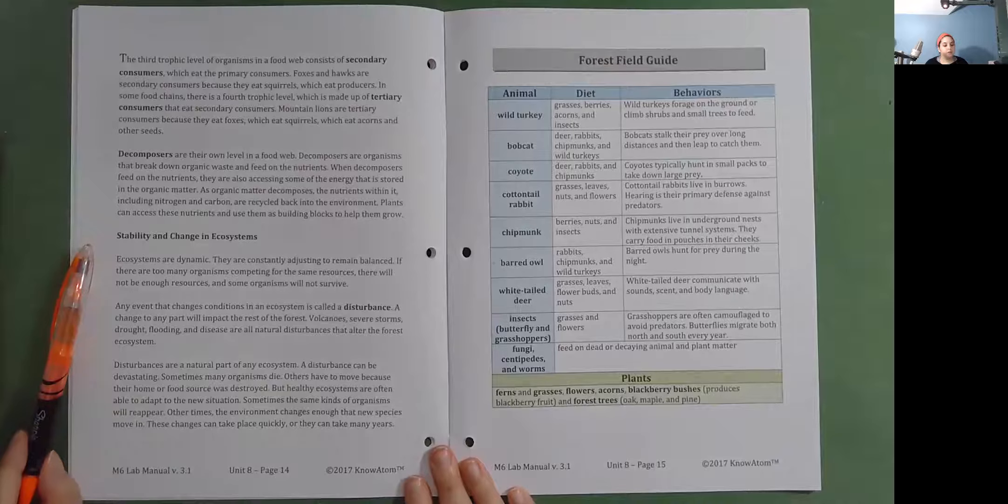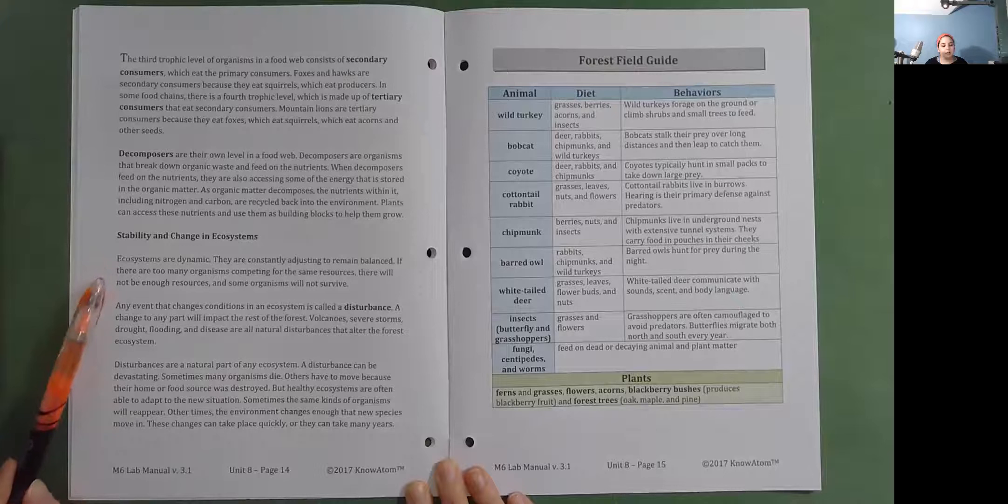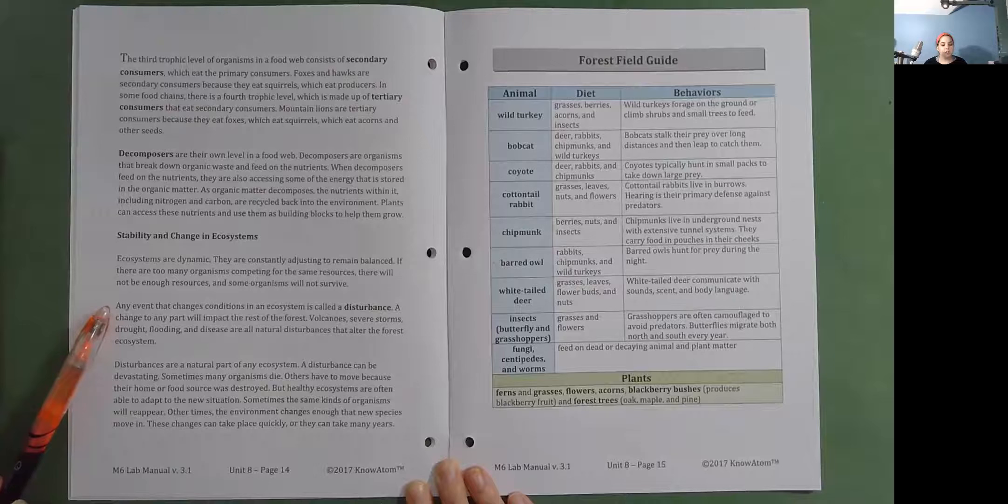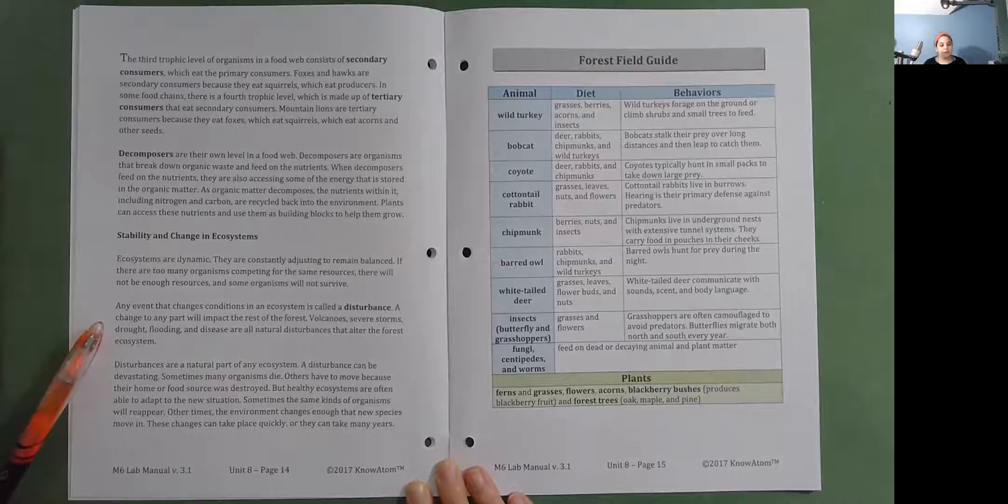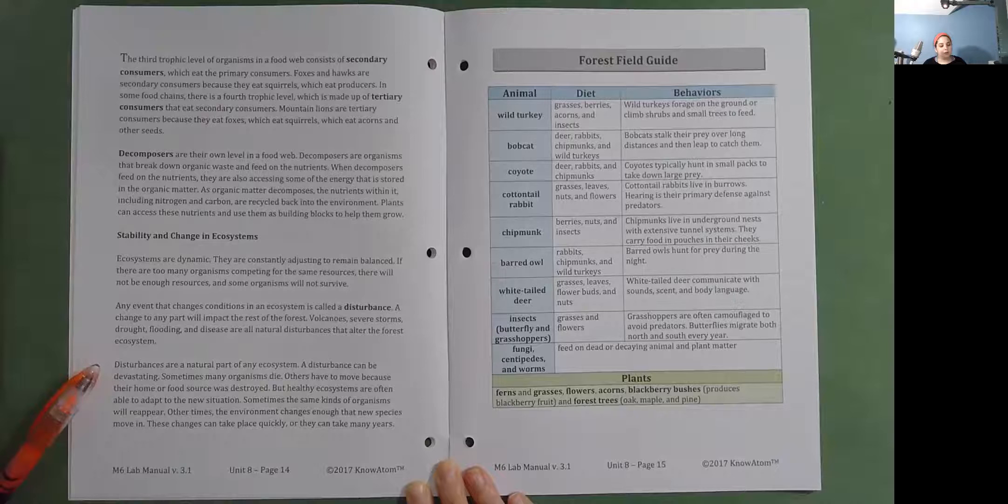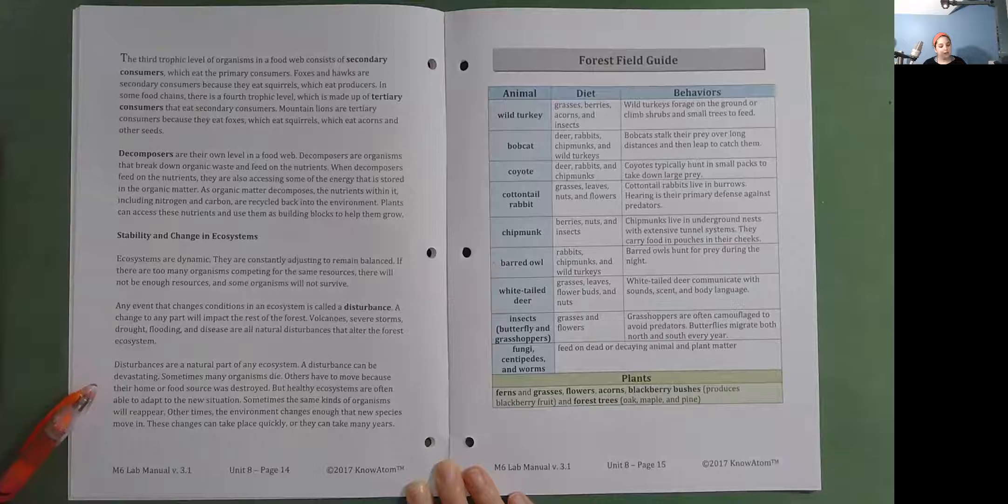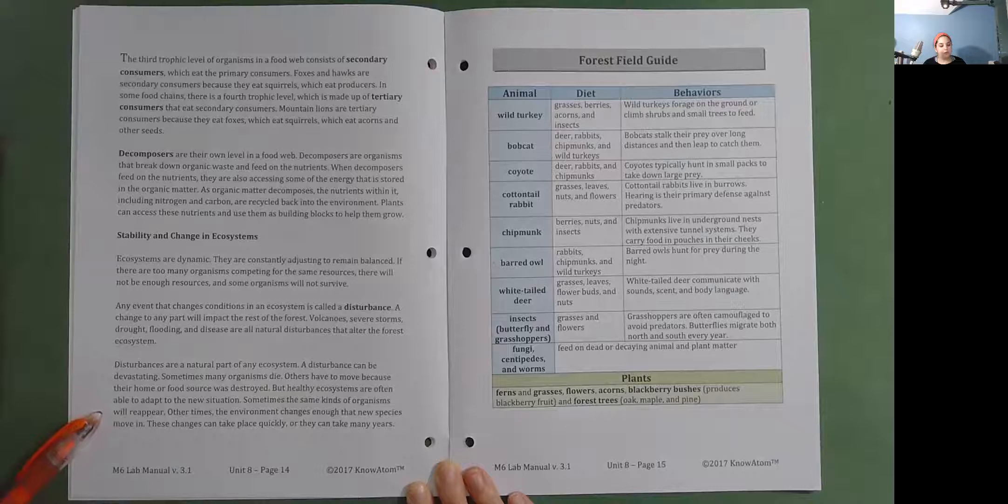Stability and change in ecosystems. Ecosystems are dynamic. They are constantly adjusting to remain balanced. If there are too many organisms competing for the same resources, there will not be enough resources and some organisms will not survive. Any event that changes conditions in an ecosystem is called a disturbance. A change to any part will impact the rest of the forest. Volcanoes, severe storms, drought, flooding, and disease are all natural disturbances that alter the forest ecosystem. Disturbances are a natural part of any ecosystem. A disturbance can be devastating. Sometimes many organisms die. Others have to move because their home or food source was destroyed. But healthy ecosystems are often able to adapt to the new situation. Sometimes the same kinds of organisms will reappear. Other times the environment changes enough that new species move in. These changes can take place quickly or they can take many years.